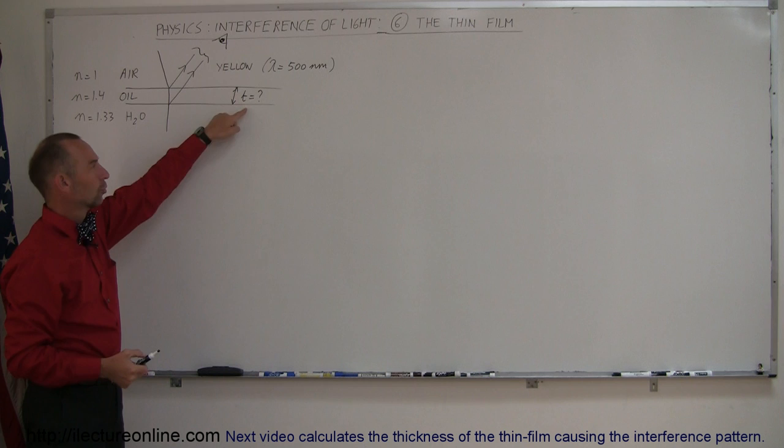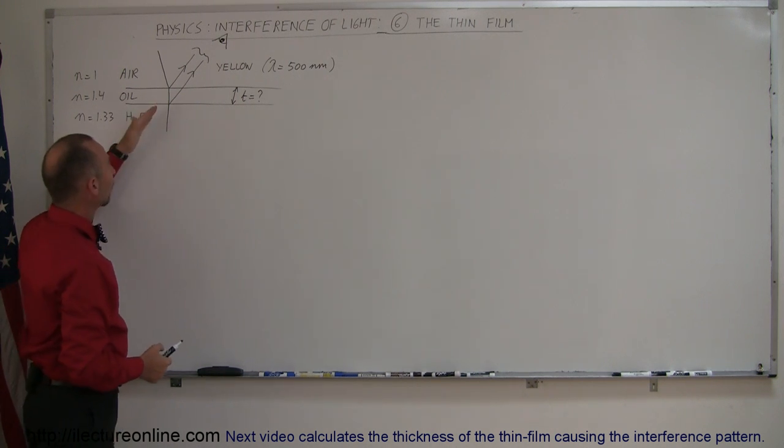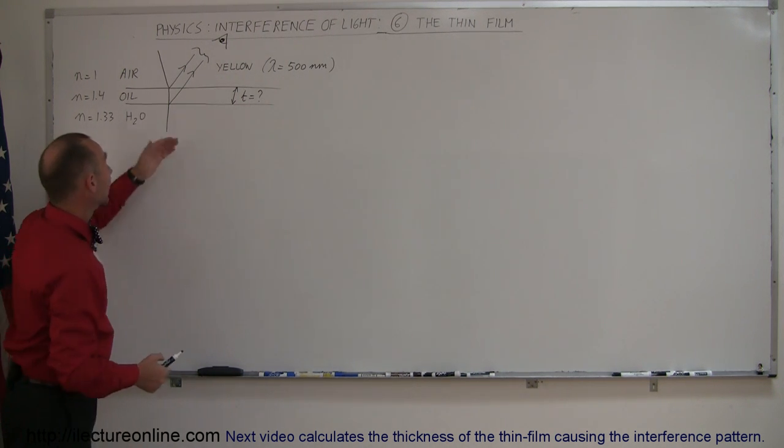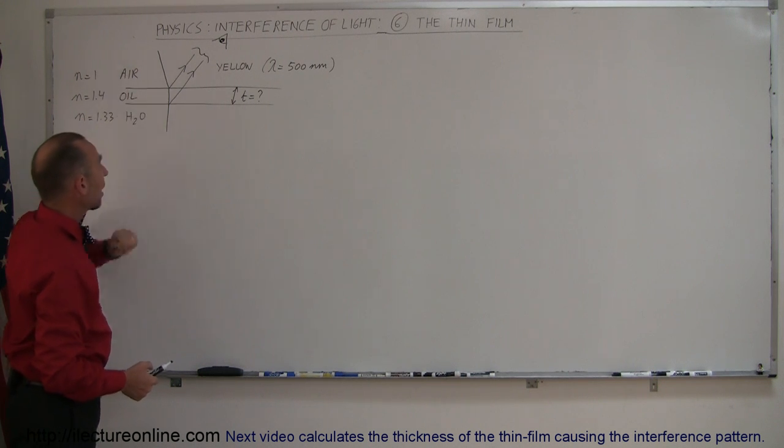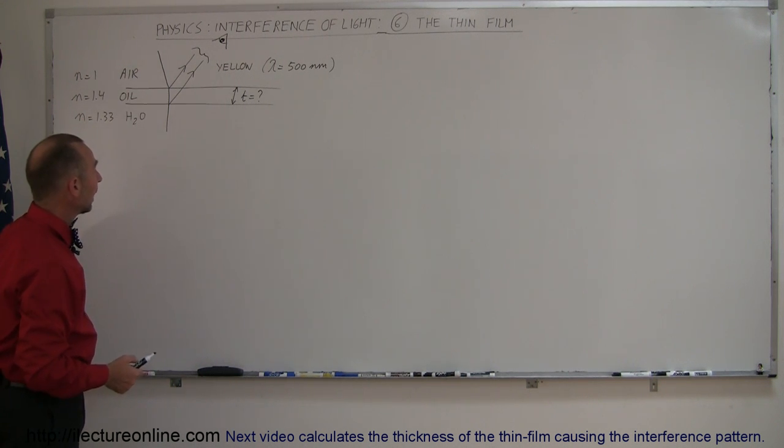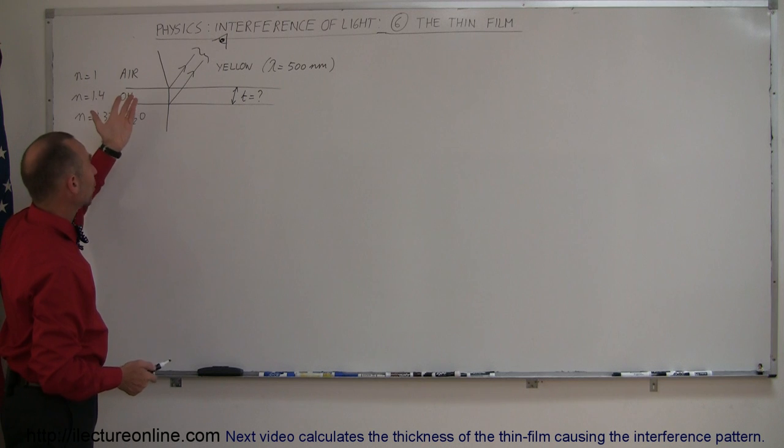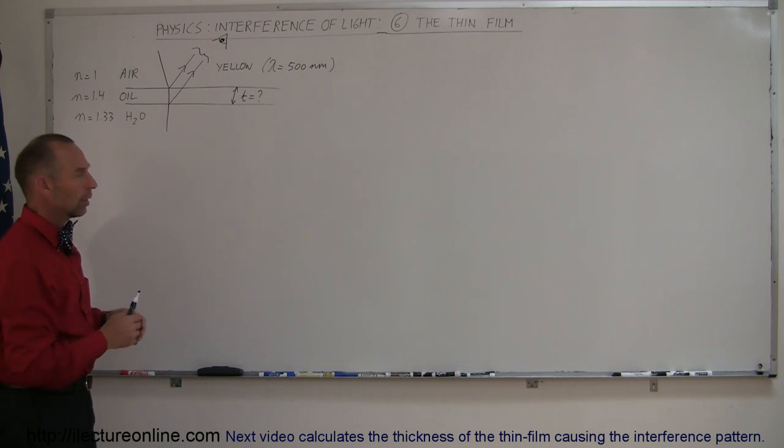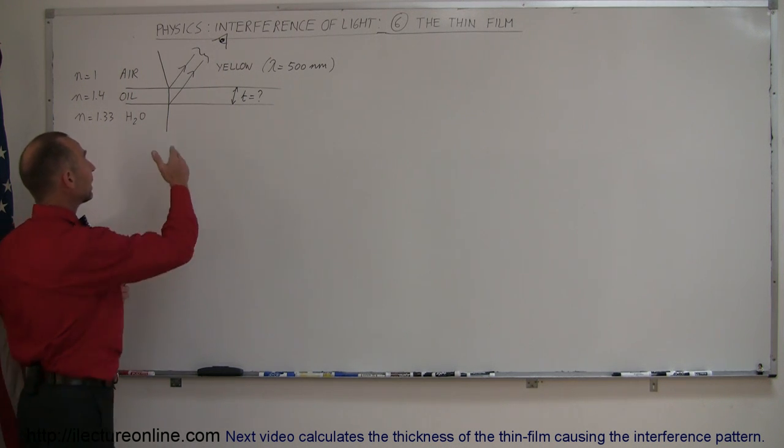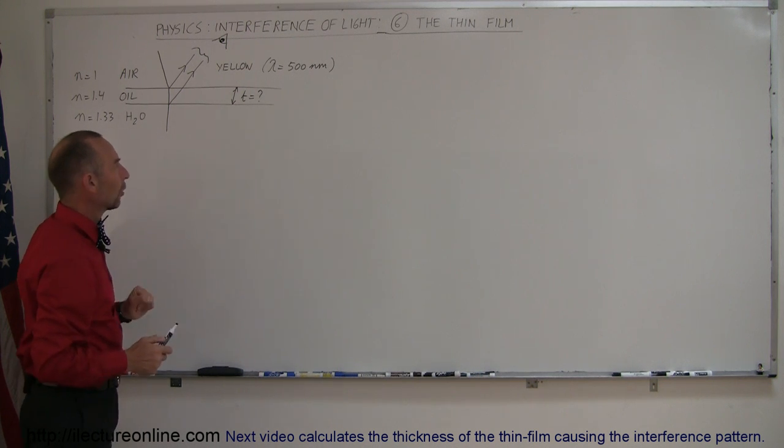The question is how thick should the oil film be in order for the observer to see yellow light being reflected back if sunlight is entering upon this puddle. Of course, the sunlight will have all the various colors of the rainbow distributed throughout it, and only the yellow light is being reflected. So what is the thickness of the oil?